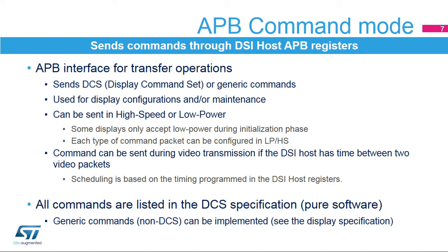APB command mode is used to send commands through the DSI Host APB register interface. Generic or Display Command Set, or DCS, commands can be sent for display configuration at startup or for maintenance operations when the application is running. All commands can be sent in either high-speed mode or low-power mode, as some displays only accept low-power communication at startup. Commands can also be sent during video streaming, and the DSI Host scheduler automatically evaluates if it has sufficient time to insert a command during video transmission. All commands are fully programmable by software, meaning the DSI Host supports all standard DCS commands and all display-specific custom commands.